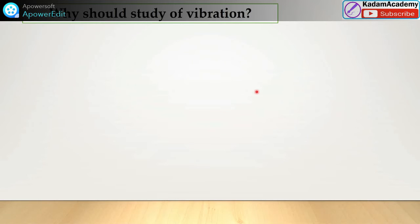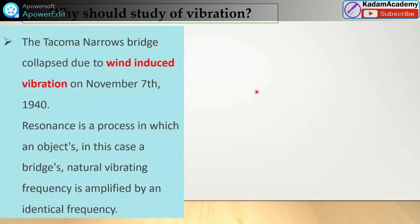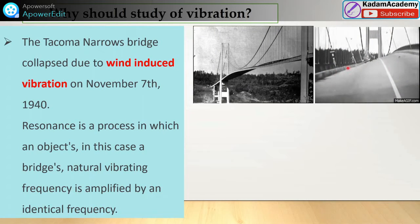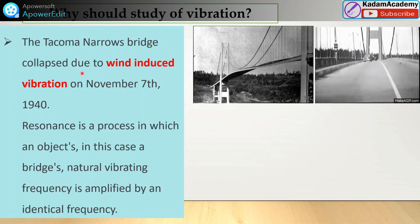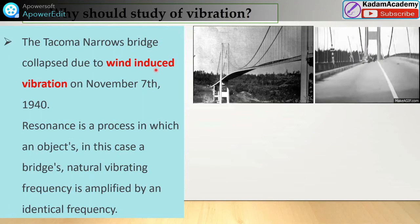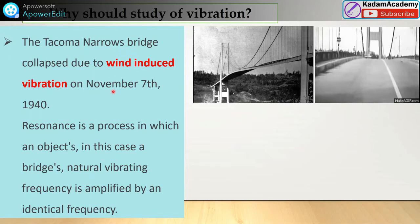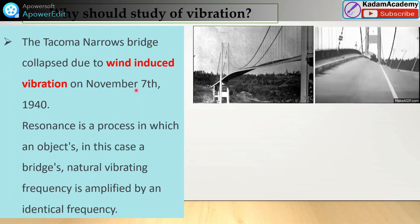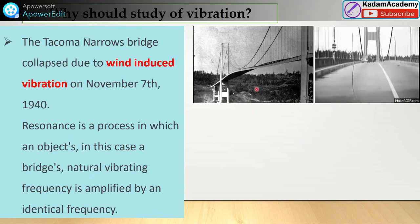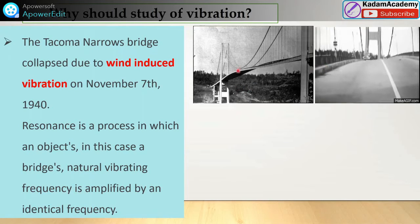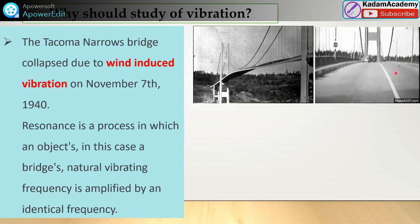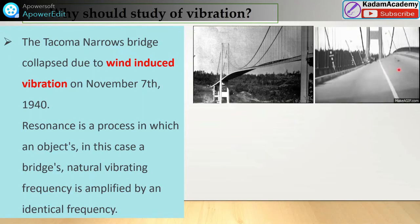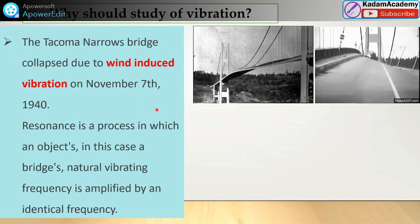Why should we study vibration? The Tacoma Narrows Bridge — see here — this bridge collapsed due to wind-induced vibration on November 7, 1940. Due to the wind, the bridge vibrated like this. Why did it happen?